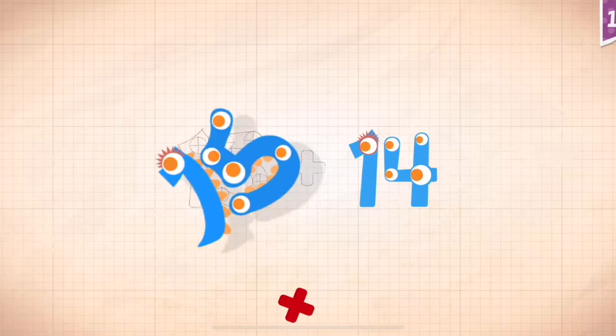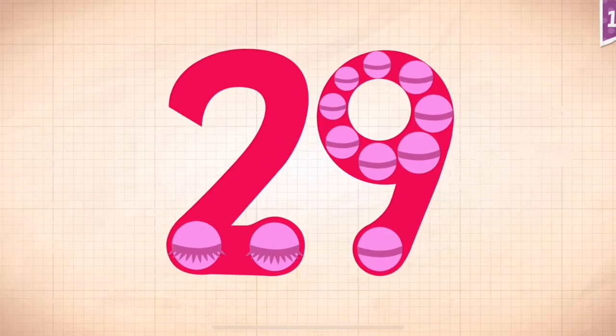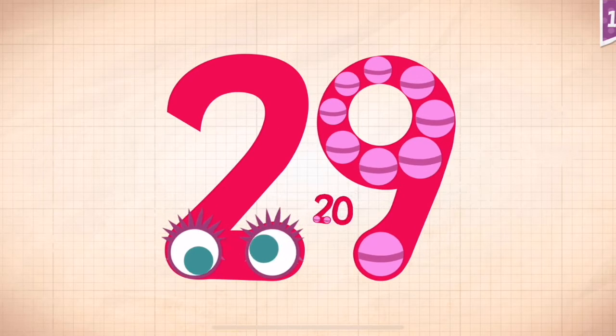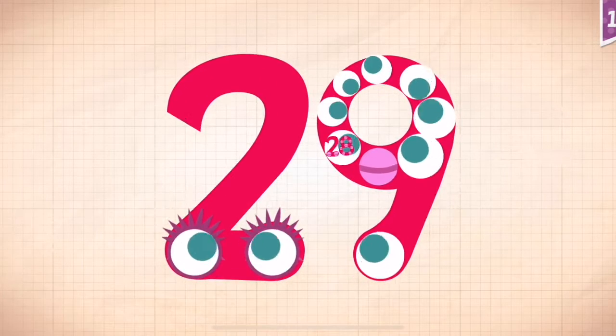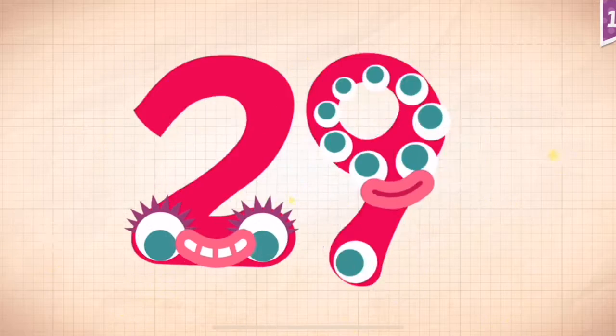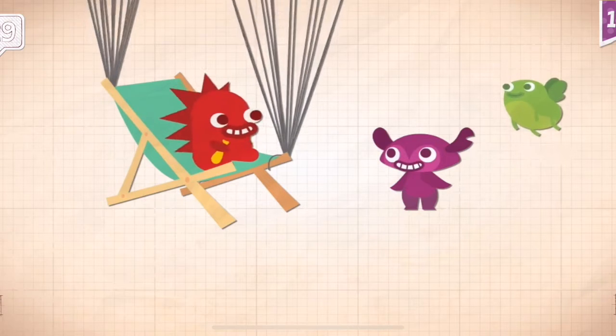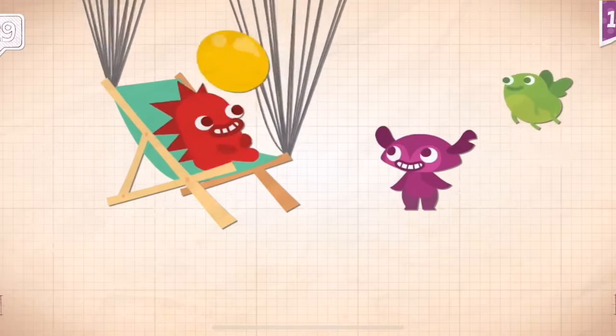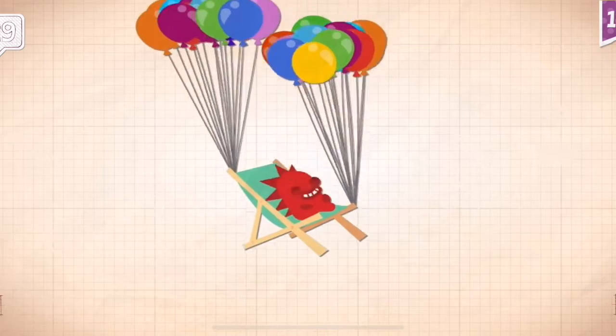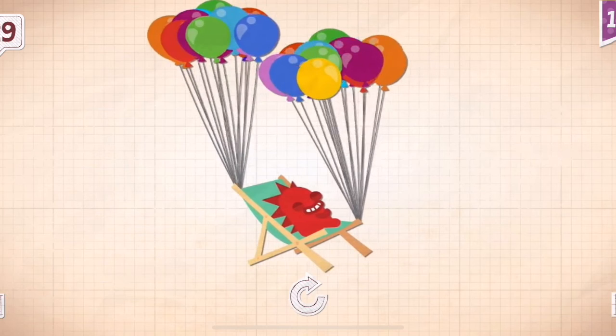14 plus 15 equals 29. Touch the monster's eyes. 20, 21, 22, 23, 24, 25, 26, 27, 28, 29. Yay! 29 balloons carried Rocky up into the sky.